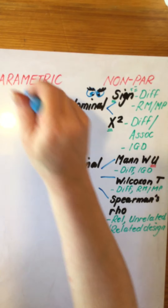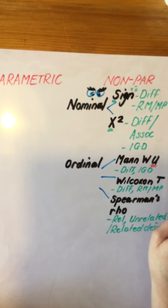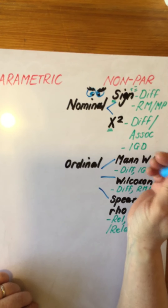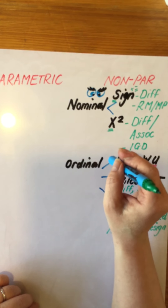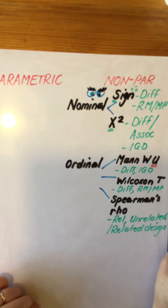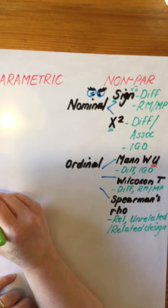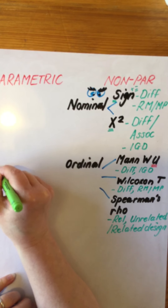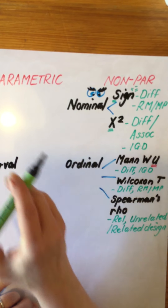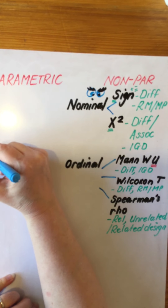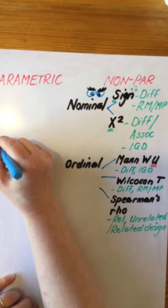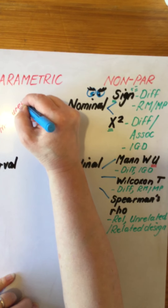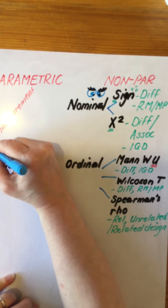If we have a look at these powerful parametric tests, they want nothing to do with nominal data because nominal data is just not powerful enough. For them, we have to go to the all-important interval data — data that has public measurement, i.e. a safe scale.